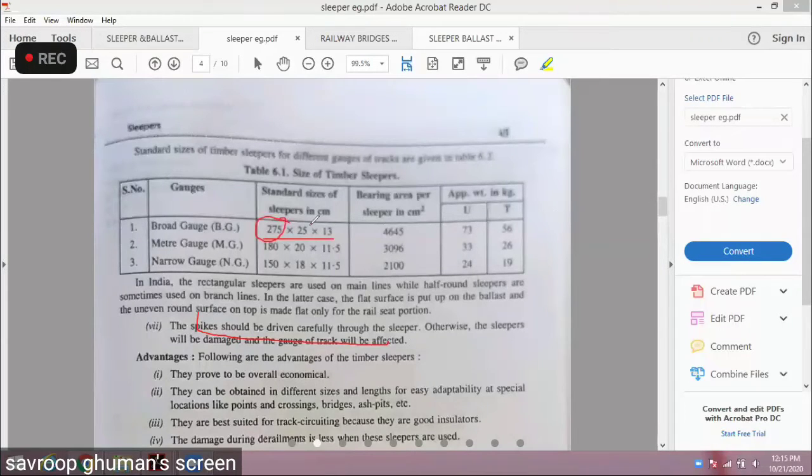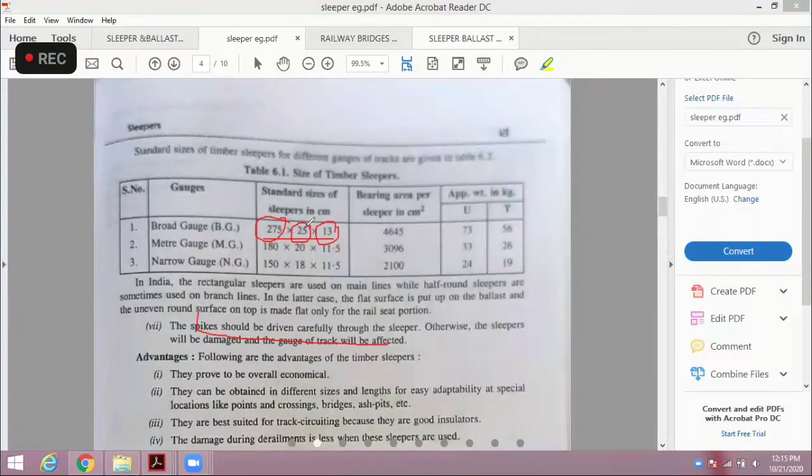275 cm length, 25 cm width, 13 cm height. These are the three dimensions which are in our railway codes. How much the bearing area is per sleeper in centimeter square?